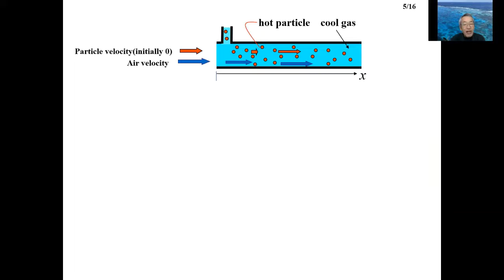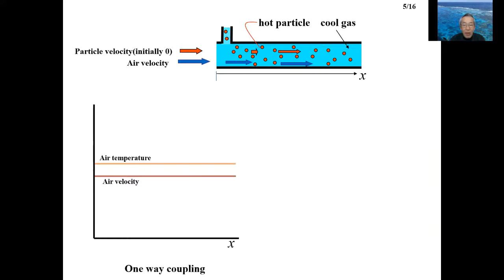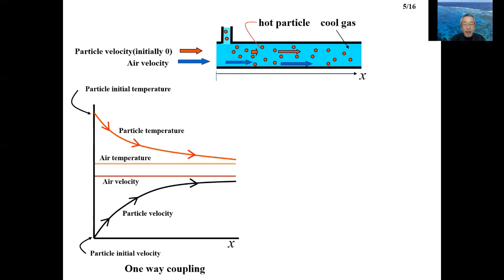I'll give an image of the difference between one-way and two-way coupling using pneumatic conveying as an example. Let's consider that hot particles are transported by air in a pipe with constant diameter. In one-way coupling, the air motion is not affected by particles. In this case, the velocity and temperature of the air are known data and do not change. Initially, the particle velocity is zero. The particles are accelerated by air, and so the particle velocity and temperature change as shown by the red and black curves.